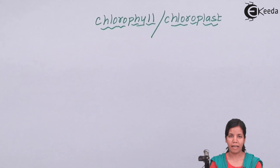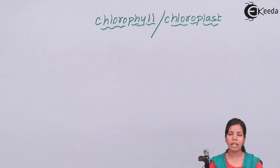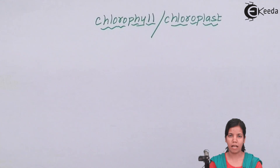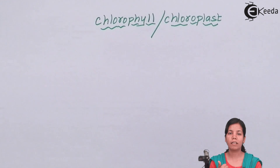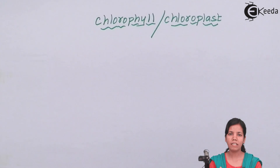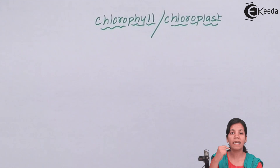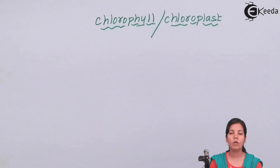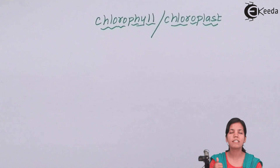Two thylakoids are connected by lamellae, which act as a bridge for various transporters. Inside thylakoids, there are photosynthetic pigments — chlorophyll A, chlorophyll B, carotenoid, and xanthophyll. These photosynthetic pigments are the place where actual photosynthesis takes place. So if we say photosynthesis takes place in chloroplast, that is only partially true. Photosynthesis actually takes place inside the thylakoid, within the grana, at the photosynthetic pigments.